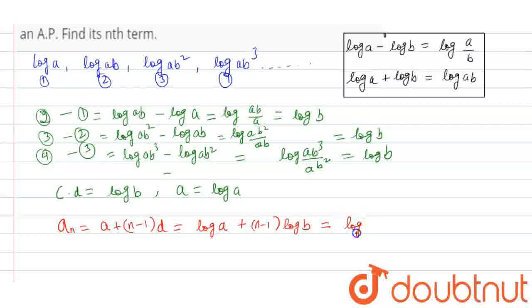So we can write this as log a plus (n-1)log b. This becomes log a plus log(b^(n-1)). Using the log addition property, this equals log(a·b^(n-1)).